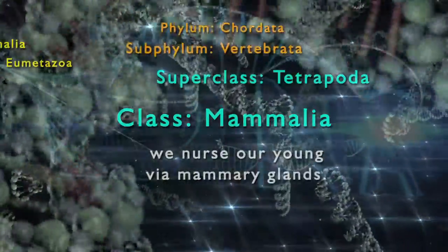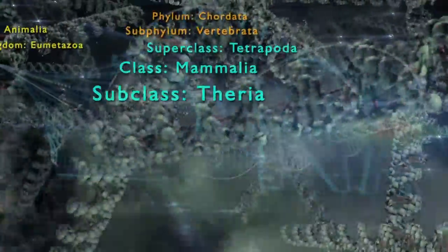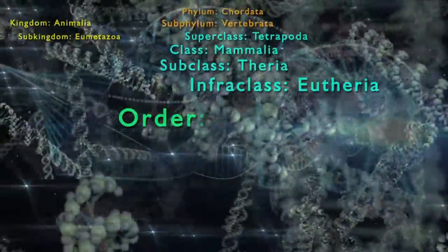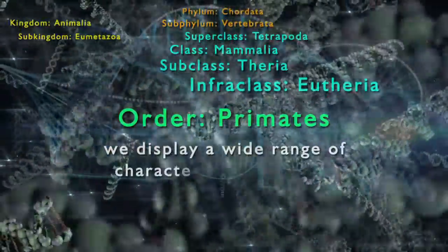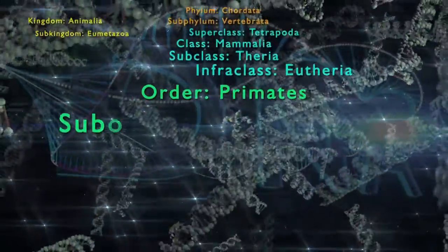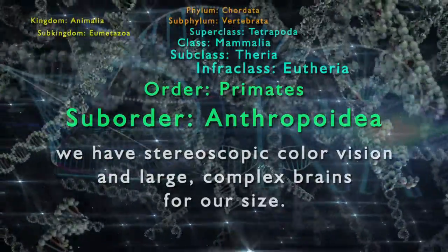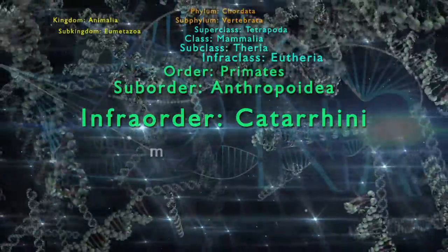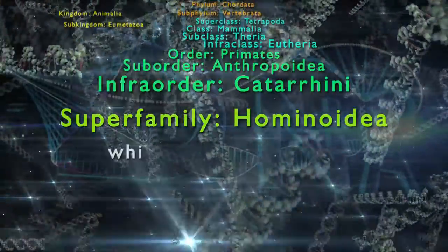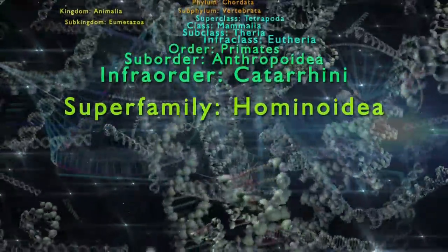Our class is Mammalia — we nurse our young via mammary glands. Our subclass is Theria — we give birth to live young without a shelled egg. Our infraclass is Eutheria — we are placental animals, as opposed to marsupials. Our order is Primates, displaying stereoscopic vision and adaptation to climbing trees. Our suborder is Anthropoidea — we have stereoscopic color vision and large complex brains. Our infraorder is Catarrhini, meaning we have narrow, down-facing nostrils and 32 teeth.